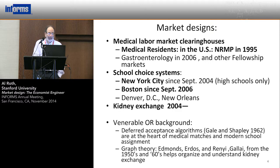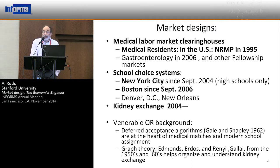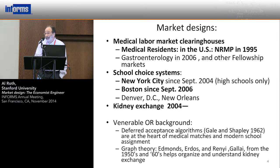I'm going to talk about medical labor market clearinghouses, and if there's time, school choice systems, and then kidney exchange. The venerable OR background is that medical labor markets and school choice systems are built on deferred acceptance algorithms of the kind that Gale and Shapley described in 1962. In kidney exchange, much of the work is built on basic graph theory, including contributions from Gallai and Edmonds in the 1960s, and work with Itai Ashlagi depends on random graph theory of the kind Erdős and Rényi discussed in 1959.